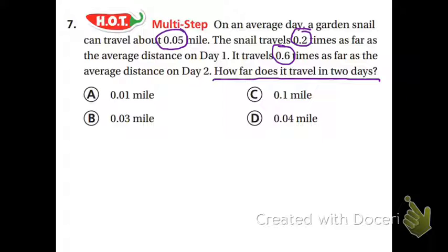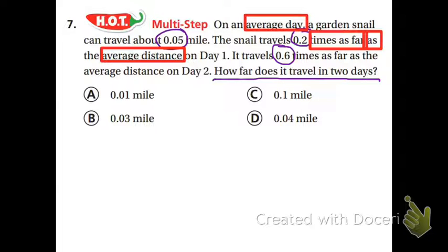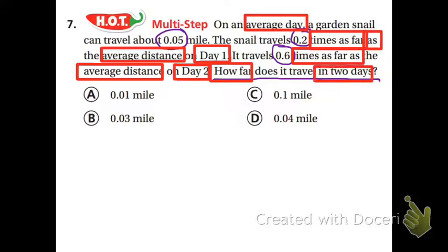And I'm going to box important words. So I would say average day. I'm not going to box miles because everything's in miles here. The times as far is important because that tells me I need to multiply. It just says times right there. I'm going to box as because I need to know times as times what? You know times and then this has the average distance. And I'm going to box day one because I want to be clear that all this stuff is happening on day one. Point six times as far as the average distance on day two. So that's what's happening on day two. How far in two days?